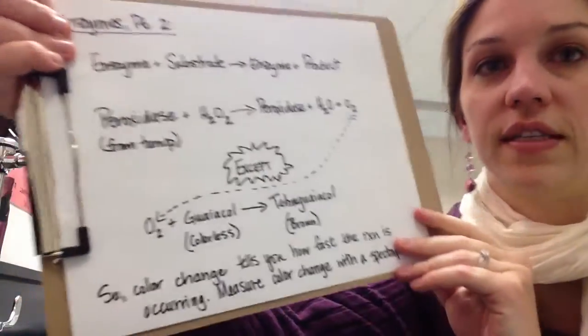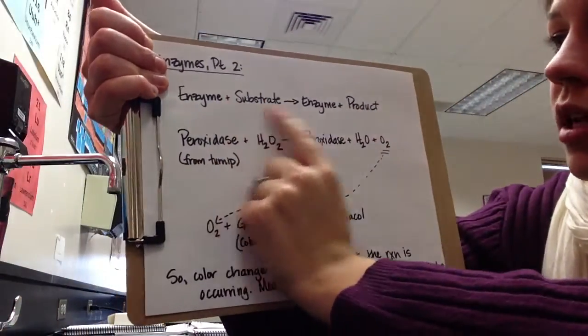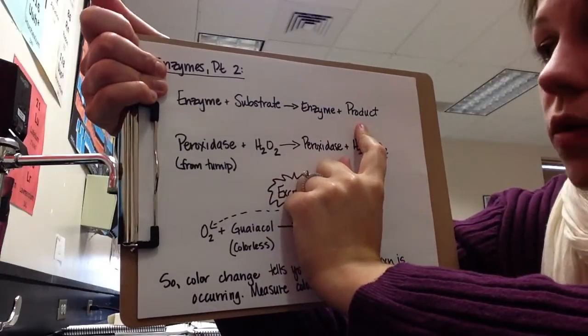Okay, so let's do part two of an enzyme lab. In part one, we looked at peroxidase and hydrogen peroxide, and we monitored how long it took for those discs to float based on the accumulation of oxygen. And so for now, in enzymes part two, we're working off of the same reaction. Enzyme plus substrate equals enzyme plus product, like it always does.